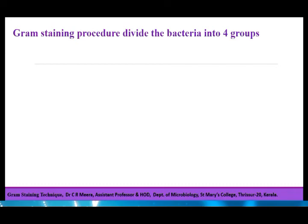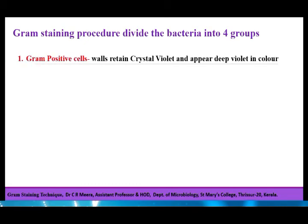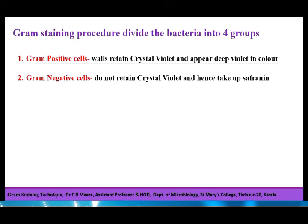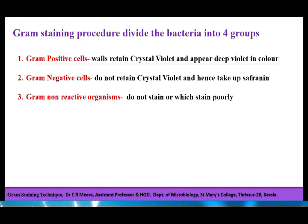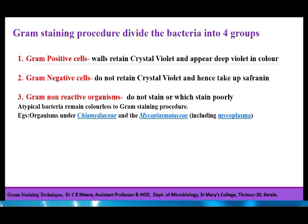By the Gram staining technique, bacteria can be divided into four groups. The first two are Gram positive cells, which retain crystal violet and appear deep violet in color, and Gram negative cells, which do not retain crystal violet and take up safranin to appear red. The third group is called Gram non-reactive organisms — these do not stain or stain very poorly. Atypical bacteria remain colorless to Gram staining. Examples include microorganisms under Chlamydaceae and Mycoplasmataceae including Mycoplasma. These organisms lack a peptidoglycan layer and hence cannot retain crystal violet.